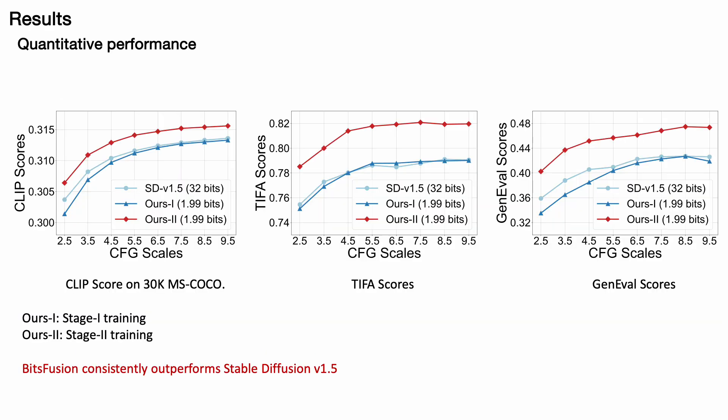We also evaluated quantitative results, including the CLIP score on the 30K MS COCO dataset, along with TIFA scores and GENEVAL scores. The figures demonstrate that our model, after stage 1 training, performs comparably to the original model. Additionally, our stage 2 model consistently surpasses the original stable diffusion V1.5 model in terms of CLIP score, TIFA, and GENEVAL scores.